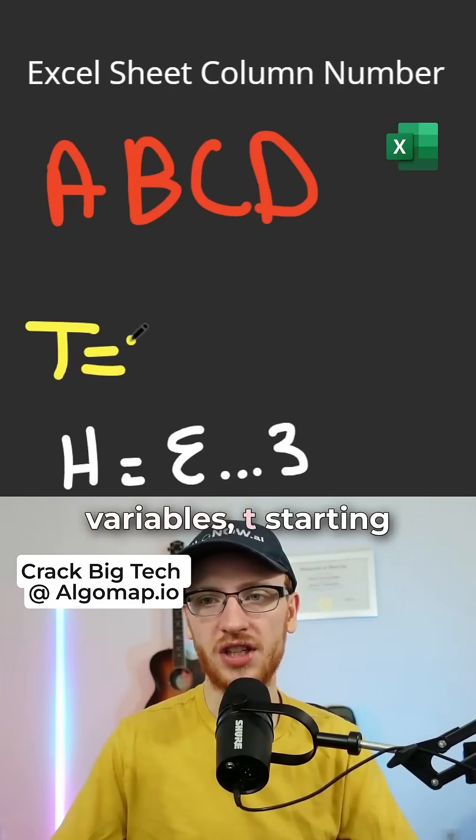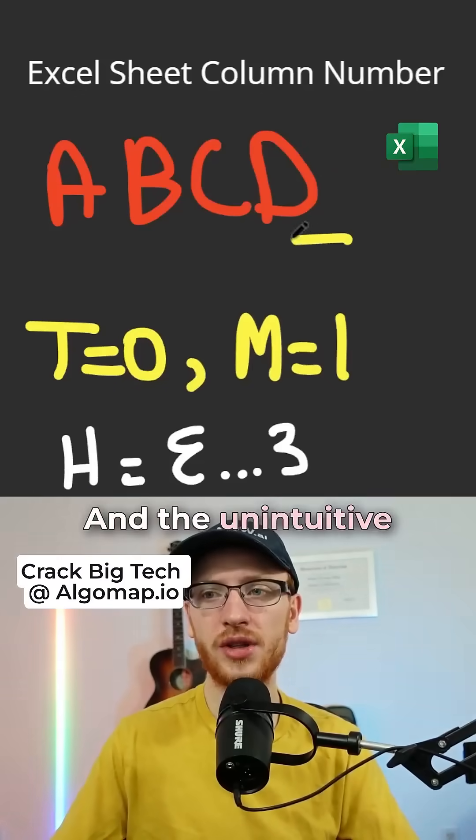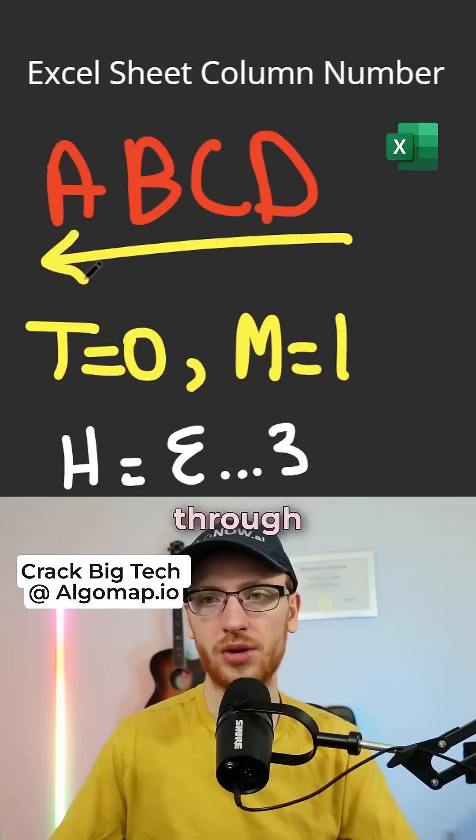Now we need two variables T starting at 0, and a multiplier M starting at 1. And the unintuitive trick to this is actually iterating through the string backwards.